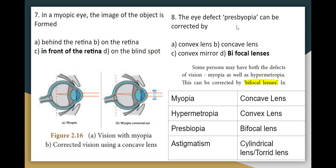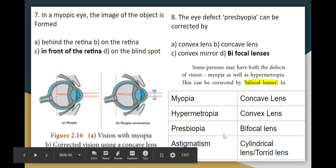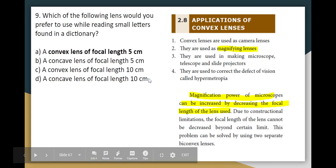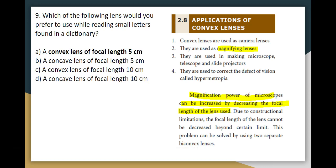For presbyopia, a bifocal lens is used. To summarize eye defects: myopic eye is corrected with a concave lens, hypermetropia with a convex lens, presbyopia uses two lenses, and astigmatism uses a cylindrical or toroidal lens. For reading small letters in a dictionary, you need magnification — use a convex lens as a magnifying lens. As focal length decreases, magnification power increases, so a convex lens with focal length 5 cm gives more magnification than one with 10 cm. The answer is Option E.